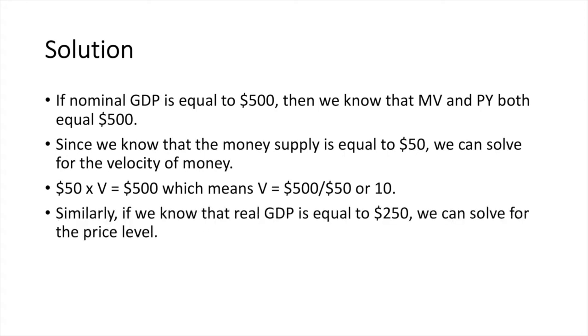Similarly, if we know that real GDP is equal to $250, we can solve for the price level. P times 250 equals $500, which means P equals $500 divided by $250, which is equal to 2. Remember, the dollar signs cancel out.